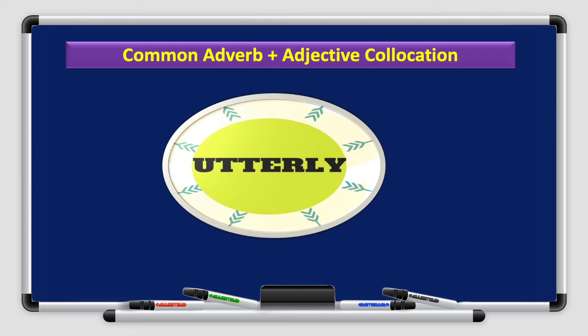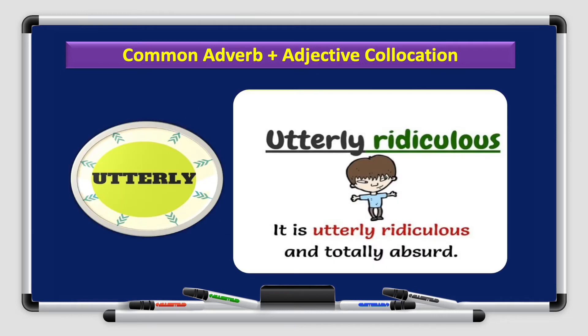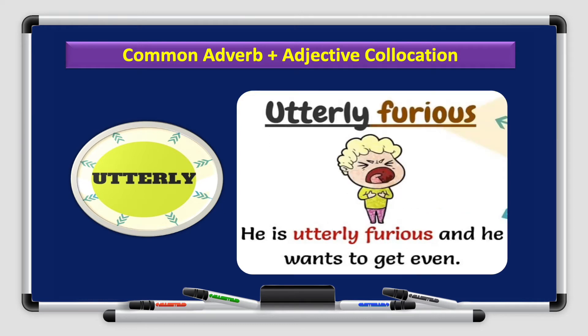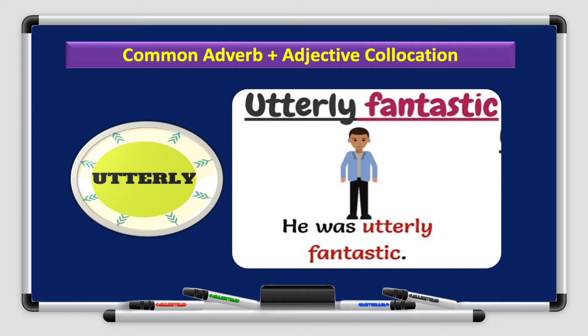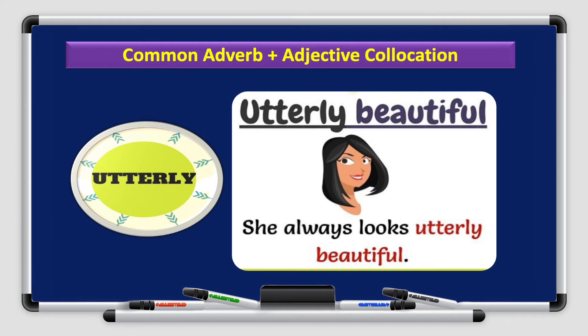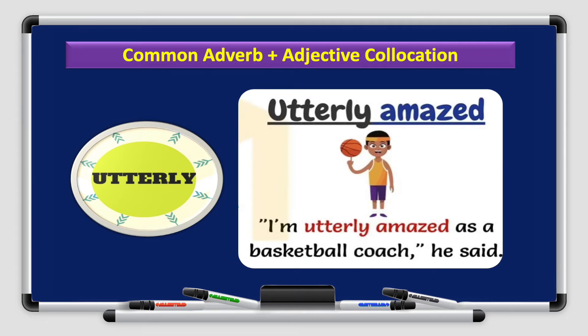Another common adverb and adjective collocation is the adverb utterly. Let's see which words go with it. Utterly ridiculous. It is utterly ridiculous and totally absurd. Utterly furious. He is utterly furious and he wants to get even. Utterly fantastic. He was utterly fantastic. So what is utterly? As you can see from the pictures in the sentence, you understand that it means totally or absolutely. Utterly beautiful. She always looks utterly beautiful. Utterly amazed. I'm utterly amazed as a basketball coach, he said.